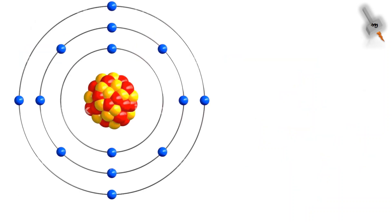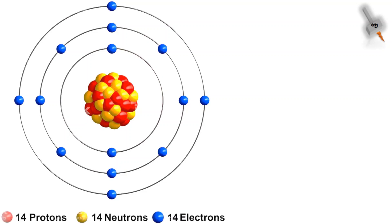This is the structure of a silicon atom which has 14 protons, 14 neutrons, and 14 electrons each. Proton, neutron, and electrons are the building blocks of an atom.